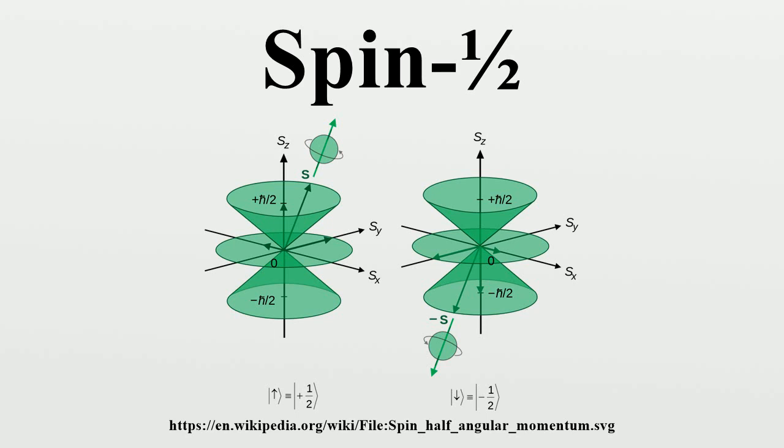When spinors are used to describe the quantum states, the three spin operators can be described by two times two matrices called the Pauli matrices whose eigenvalues are plus or minus ℏ/2. For example, the spin projection operator Sz affects a measurement of the spin in the Z-direction. The two eigenvalues of Sz, plus or minus ℏ/2, then correspond to the following eigenspinors.